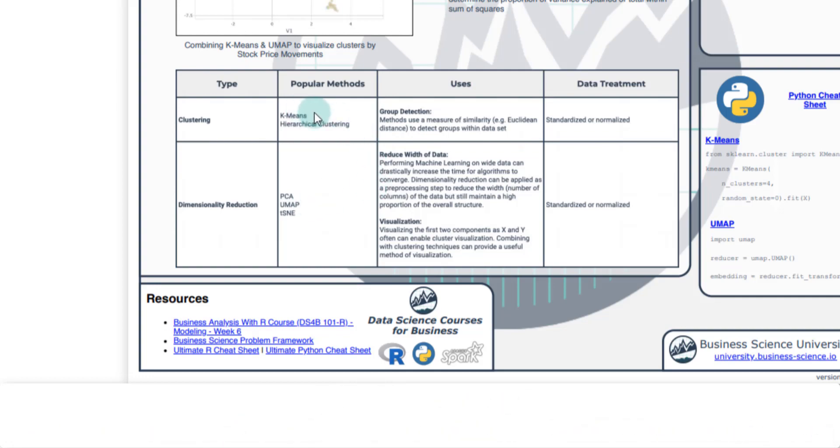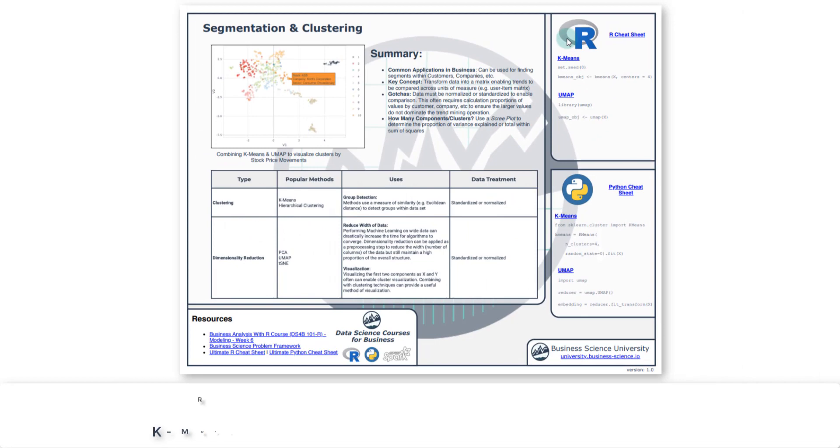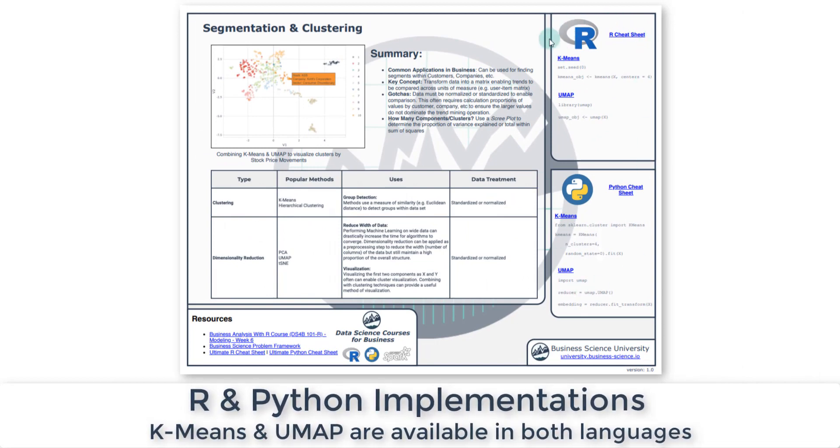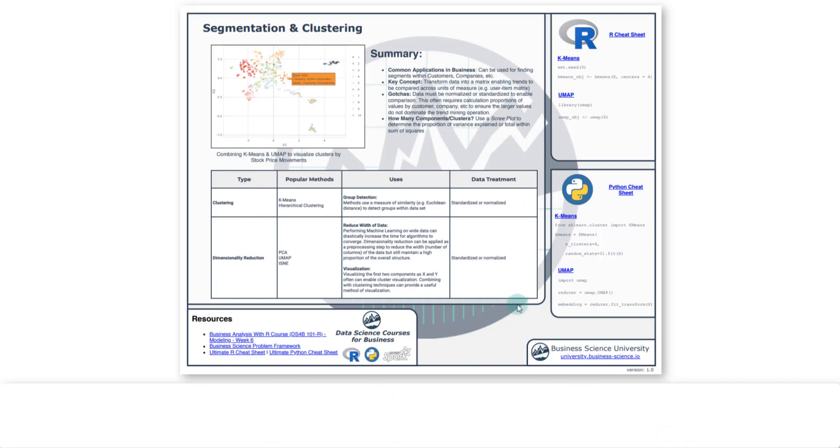We'll be using k-means and UMAP. There's some code here, whether you're coming from the R track or the Python track. This is the code that you'll be using for k-means and UMAP in each language.